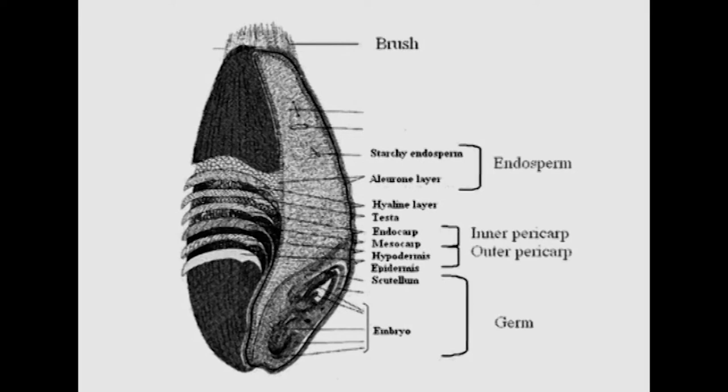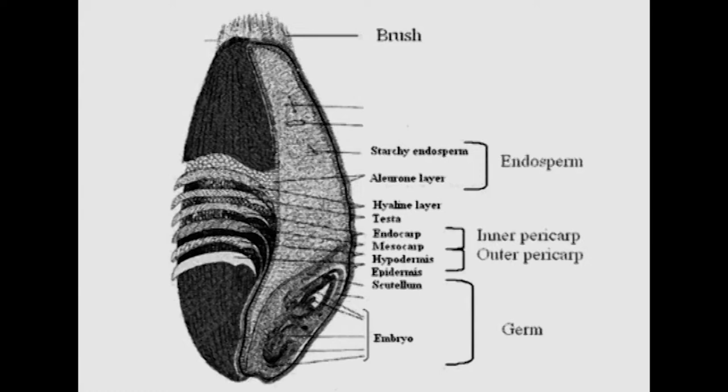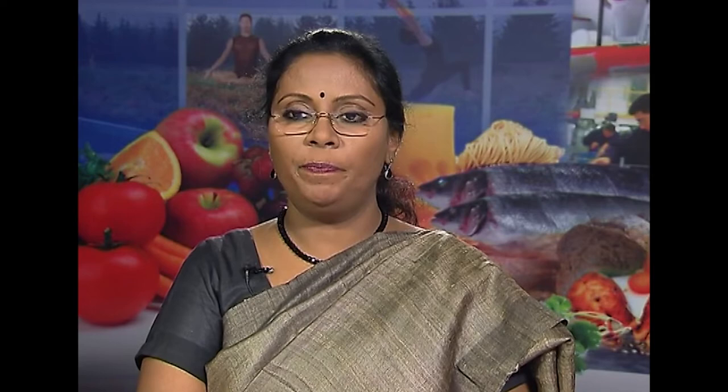Next is the embryo. The germ or embryo consists of many parts. It is separated from the endosperm by the scutellum, which has the function of mobilizing the stored food in the endosperm and transmitting it to the embryo when the grain germinates. The germ and scutellum are very nutritious, rich in protein and fat. Most of the B vitamins in the grain are present in the scutellum.